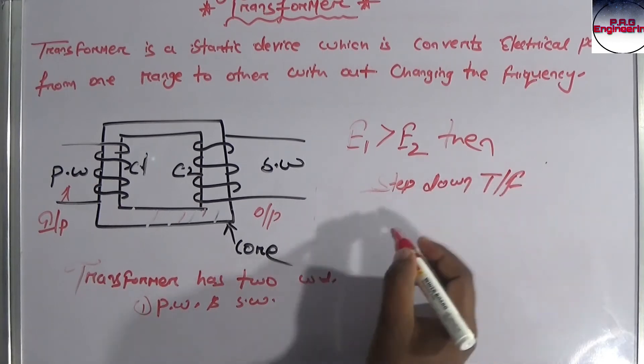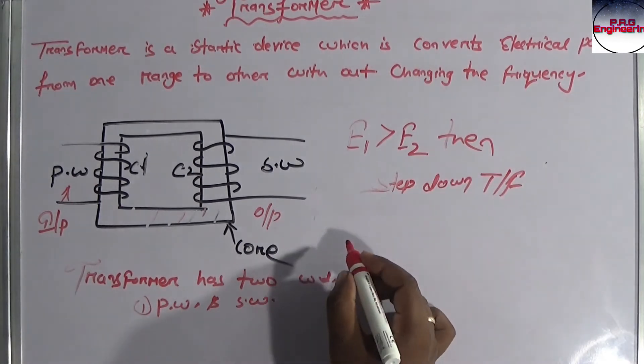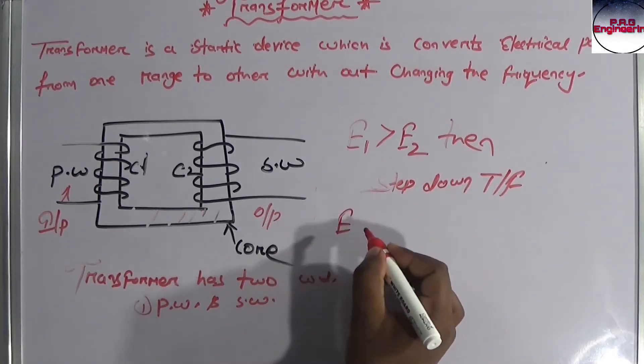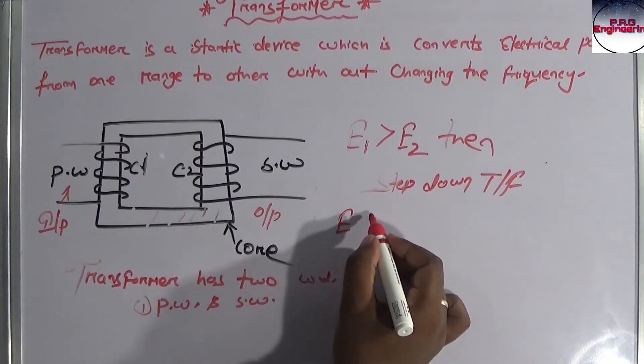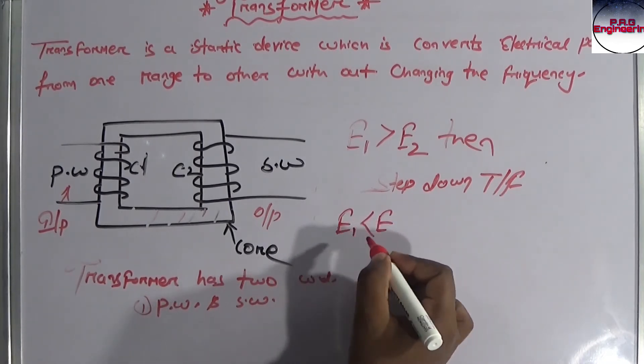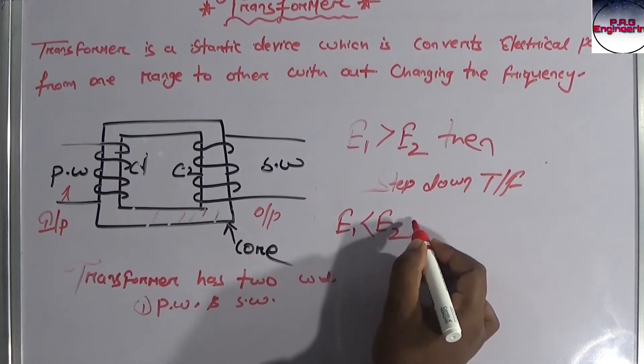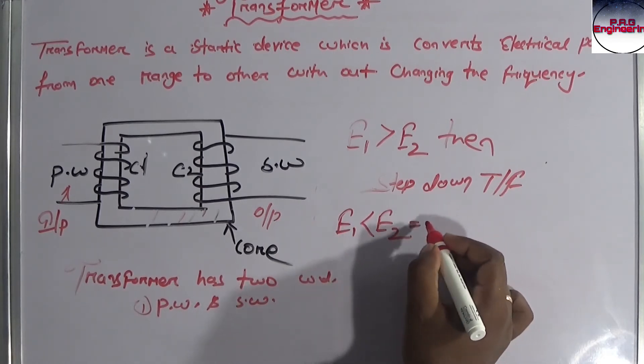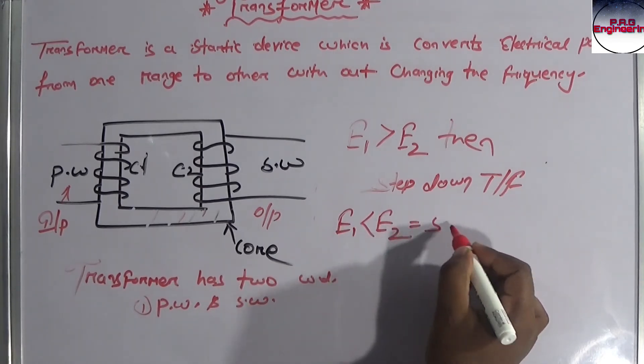Next, E2 smaller than, sorry, E1 smaller than E2, this is called step up transformer.